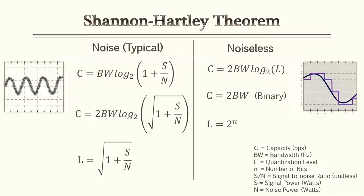Now that you have some concept of what the Shannon-Hartley theorem is, we can go over the equations. The equations are broken into two sections: noise and noiseless. It's very common to encounter noise equations in applications and problems, because in every transmission you're always going to have noise. This is usually expressed as a ratio, which is your signal-to-noise ratio.